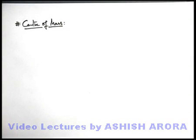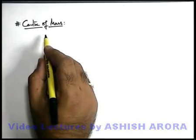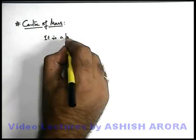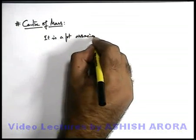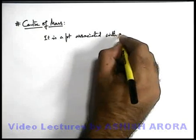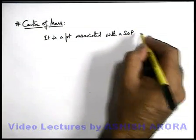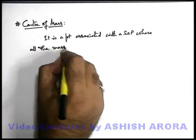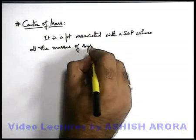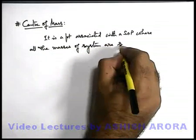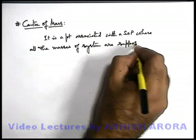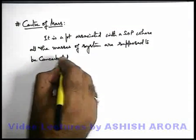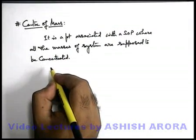Dear students, let's now discuss centre of mass. When we talk about centre of mass, we can simply state that it is a point associated with a system of particles where all the masses of the system are supposed to be concentrated. This is a point where we consider all the mass of the system is supposed to be concentrated.